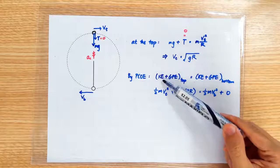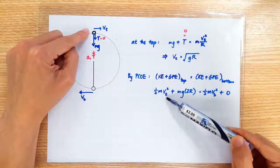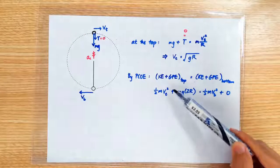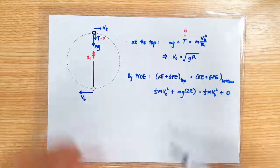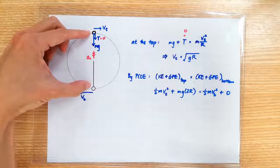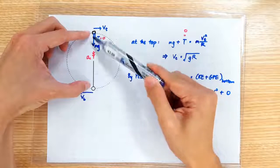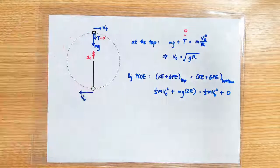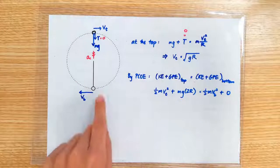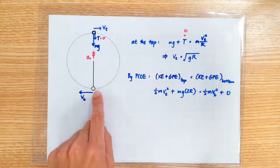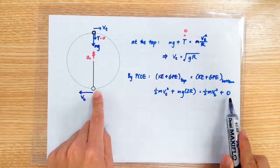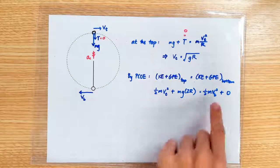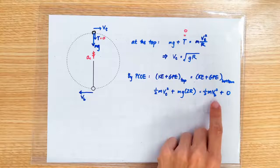We will write the KE of the stone at the top as half m vt square. And the GP of the stone at the top will be mg times this height here, which is of course 2 times the radius of the circular motion. So we are taking the GP of the stone to be zero at the bottom position. And the KE of the stone at the bottom, of course, we will write it as half m vb square.